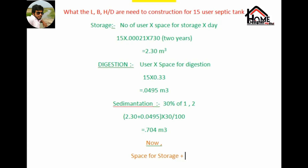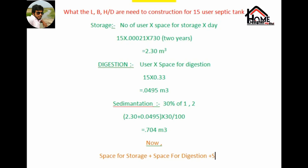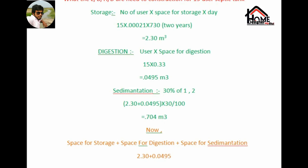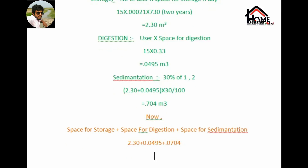Now total volume = space of storage plus space of digestion plus space of sedimentation — tino ki addition hogi. Septic tank ki volume = 2.30 plus 0.0495 plus 0.0704 equals 3.055 meter cube.